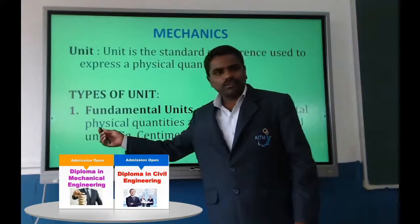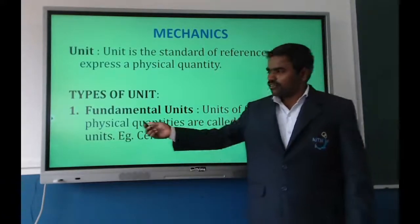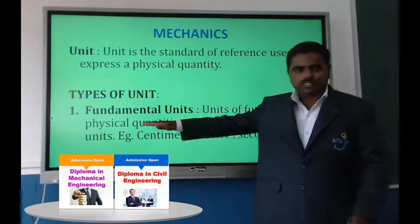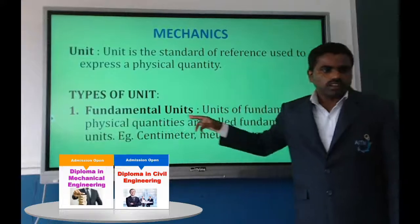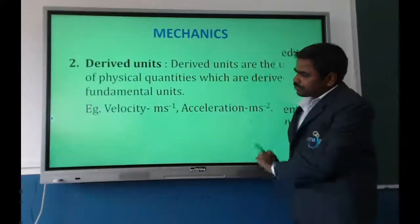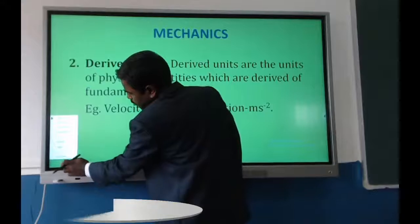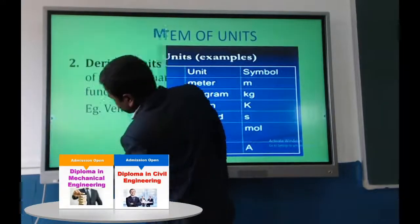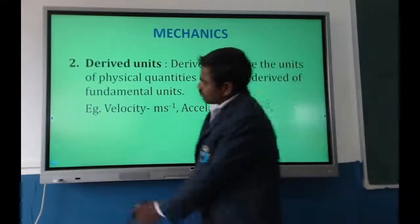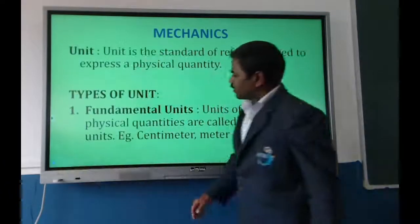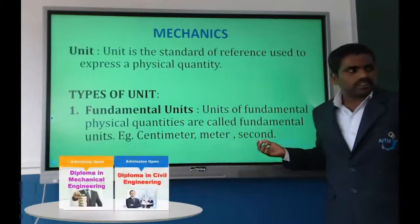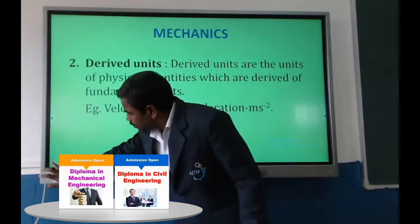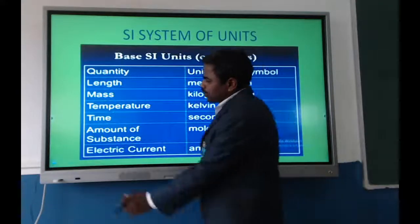A physical quantity means something which can be measurable. Units of these physical quantities are called fundamental units. Examples of fundamental units include centimeter, meter, and second.